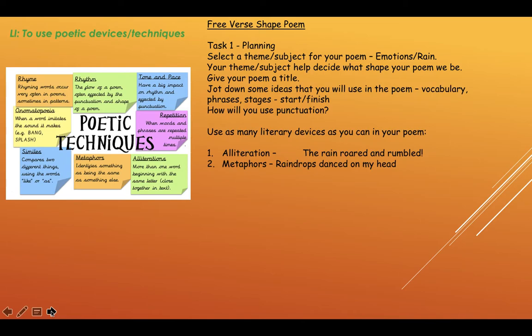Metaphor example: 'raindrops danced on my head' — raindrops don't dance, humans dance. That could be quite an easy metaphor to magpie or replicate. Magpie ideas are good, but try and think of your own as well. For onomatopoeia, can you add some onomatopoeic words like whoosh, splish, splash — which would be easy because it's to do with rain and water. Those words fit perfectly into the poem.